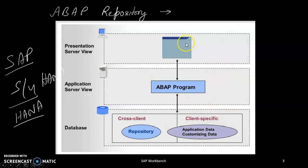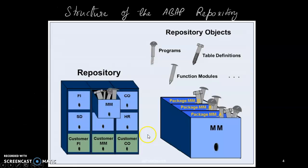All sauce-making companies in India use the same type of specification, so it is called client-specific. All Coca-Cola companies need a different but same type of specification, so they use another application data and customizing data. But cross-client data can be used by both the sauce company and Coca-Cola company. Now we will discuss the repository — the repository contains all packages.